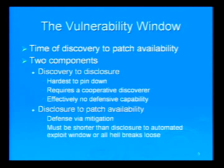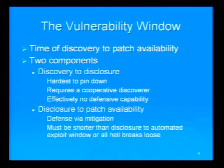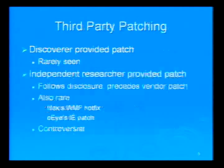Then you have the time window from disclosure to the availability of a patch. That can last differing amounts of time depending on the disclosure model used by the discoverer. During this window you might have defense by mitigation — if you know how to mitigate the attacks, the most severe would be securing the service. The idea here is that we want this window to be short — shorter than the time it takes to automate that vulnerability and turn it into a worm, because then all hell breaks loose and that's where the monoculture comes into play.